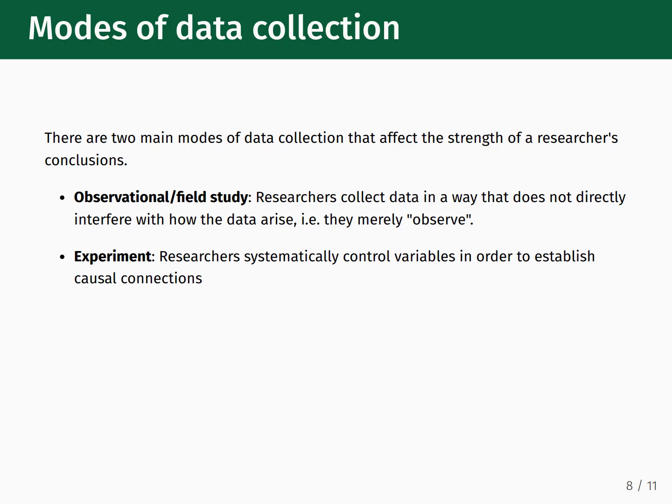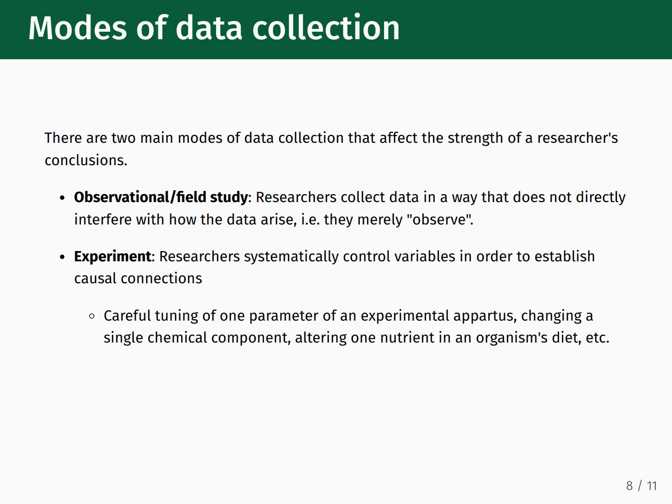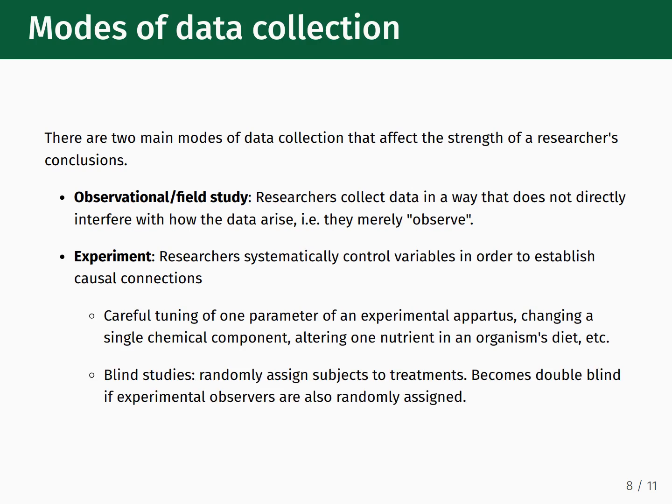In an experiment, researchers do this by careful tuning of one parameter of an experimental apparatus — for example, by changing a single chemical component or by altering one nutrient in an organism's diet. Often, when conducting an experiment, people would like to have what's called a blind study, in which you randomly assign subjects to treatments. This experiment can become double-blind if the experimental observers themselves are also randomly assigned. The idea is that you do not want to influence, either consciously or unconsciously, the outcomes that you're going to observe.